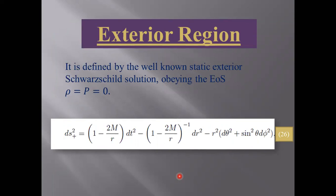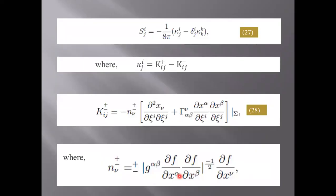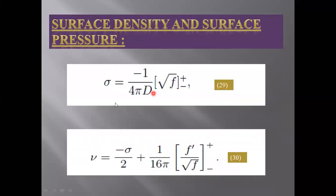Junction conditions are helpful to match the exterior and interior regions at a hypersurface. With the help of the Lanczos equation, we can find out the stress energy momentum tensor which is given here, and the extrinsic curvature is defined in equation 28 where the unit normal is defined. Then using the Lanczos equation, we find out the formula for the stress energy density and for the surface pressure.